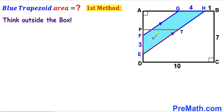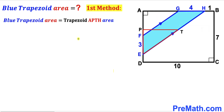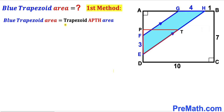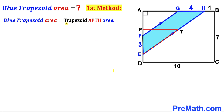We are going to drag this triangle all the way such that side FG coincides with side EH. As a result, we end up with trapezoid APTH. The area of the blue trapezoid is going to be equal to the area of trapezoid APTH, so our task is now to calculate the area of trapezoid APTH.